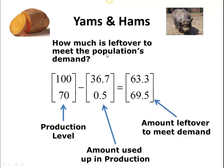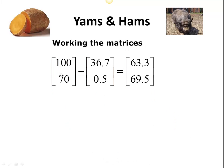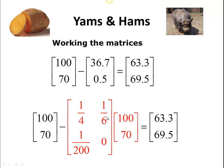So there's our answer to that second question. And now what I want to do is take a moment and expand this and see if we can make a nice little formula out of it so that we can just go straight and use the formulas. So when working with these matrices — the production level, how much is used up in production, and how much is left over to meet the demand — that middle matrix was calculated because we used what we call the technology matrix, or the input-output matrix, multiplied by the production level.